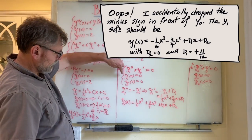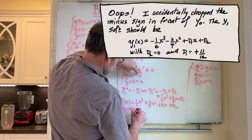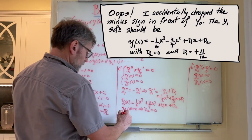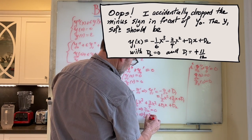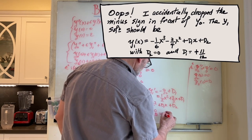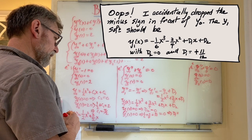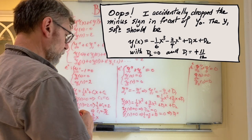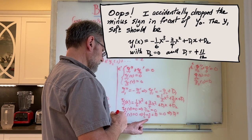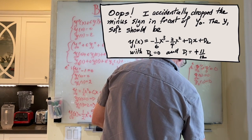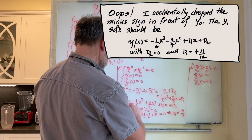Applying the boundary conditions: at x equals zero the solution must vanish, so d2 equals zero. From y1 of one equals zero, we get one sixth plus three quarters plus d1 equals zero. The common denominator is twelve, so two plus nine is eleven, giving d1 equals minus eleven over twelve.